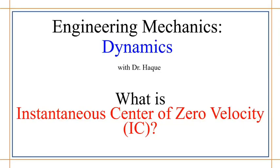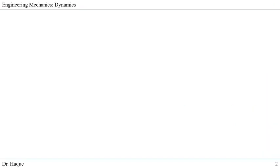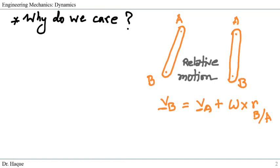This is a very interesting topic: instantaneous center of zero velocity, or IC. What is it and how to find IC? What are the applications? Before we discuss that, let's talk about the benefits of instantaneous center of zero velocity. Why do we care? If you remember in our webcast about relative motion analysis...